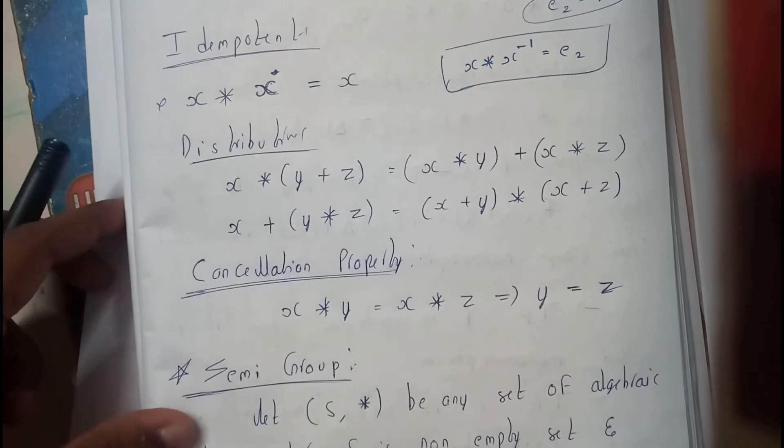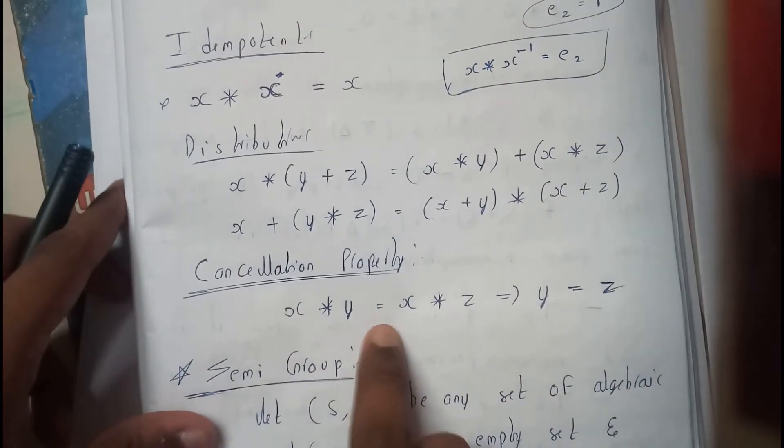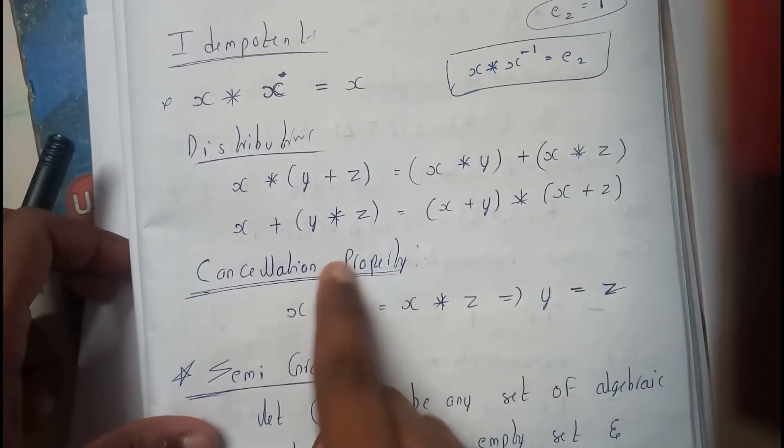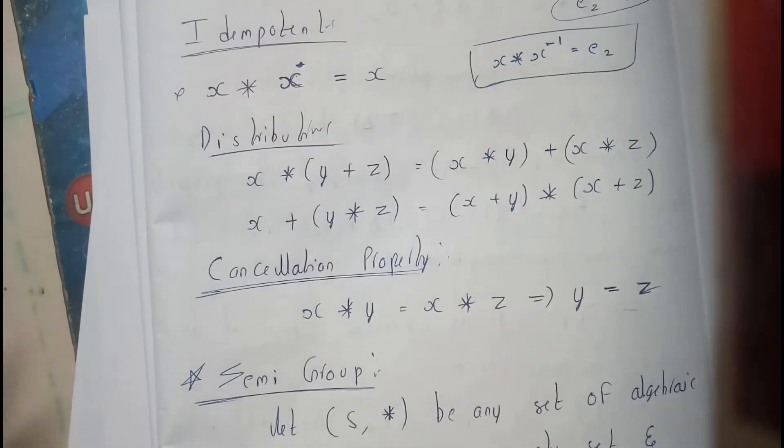Cancellation property: x * y equals x * z implies y equals z.